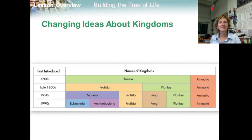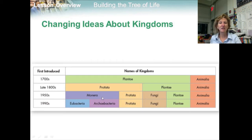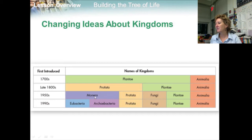Later still, scientists realized that bacteria lacked nuclei, mitochondria, and chloroplasts found in other forms of life. All prokaryotes — bacteria — were placed in yet another new kingdom, Monera. Single-celled eukaryotic organisms remained in the kingdom Protista. This process produced five kingdoms: Monera, Protista, Fungi, Plantae, and Animalia.